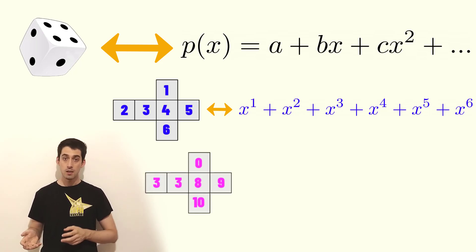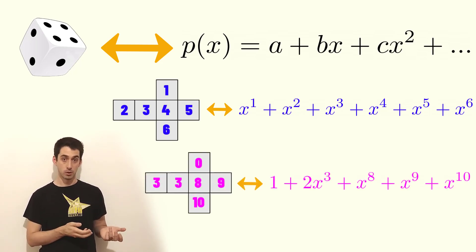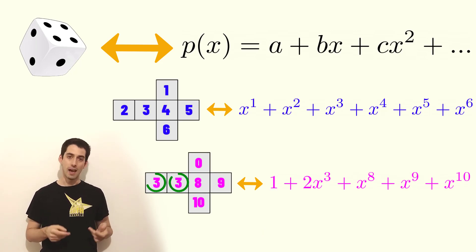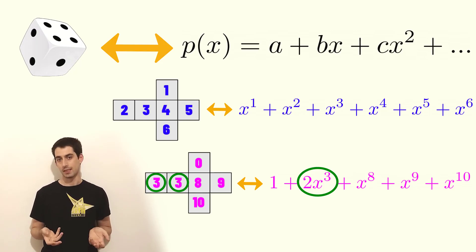This is the die. This is the associated polynomial and you see there is the zero face and there are two threes. So we have two times x to the third. The problem is why are we doing that?